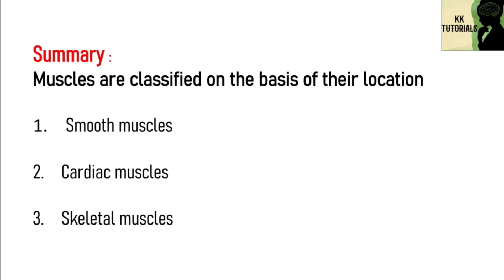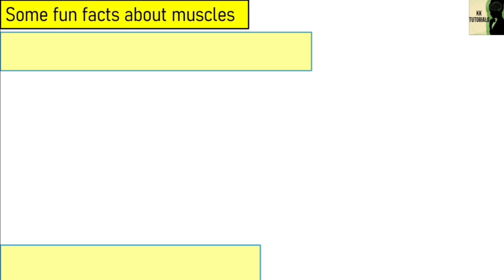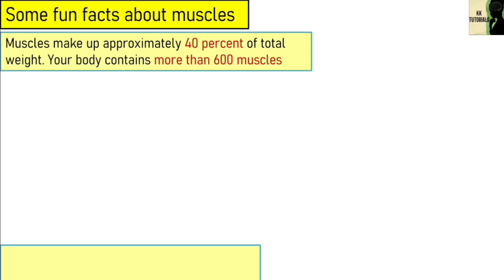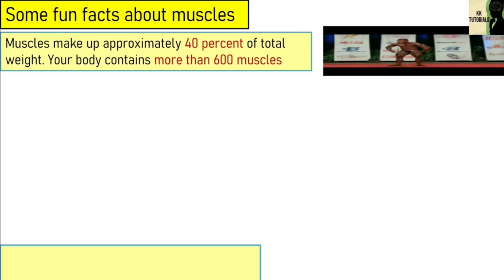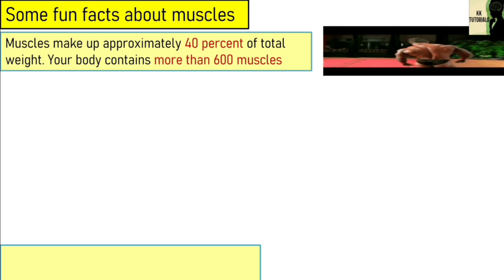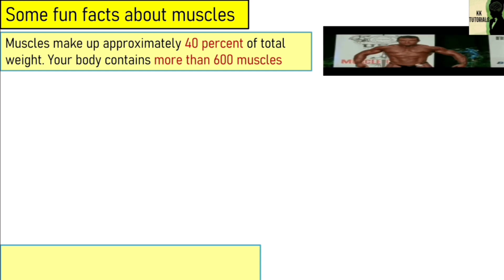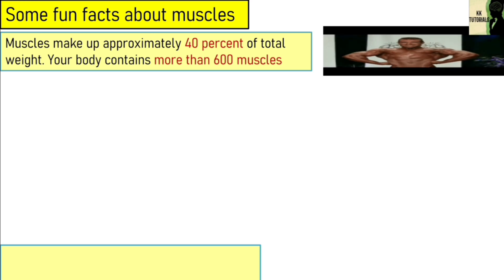Now let's talk about some interesting fun facts about muscles. Muscles make up approximately 40% of total body weight. Your body contains more than 600 muscles, including the muscles you can feel in your arms and legs as well as muscles deep inside your body. By comparison, your body has 206 skeletal bones.